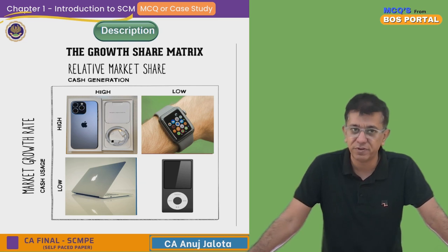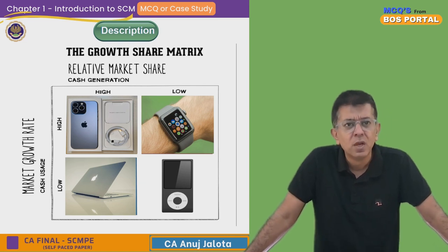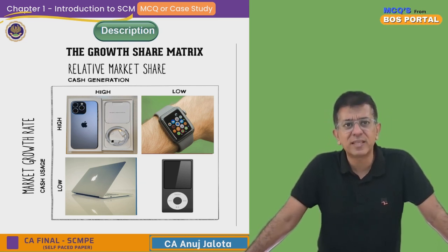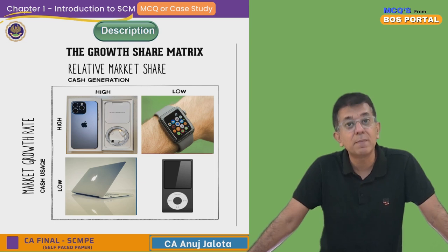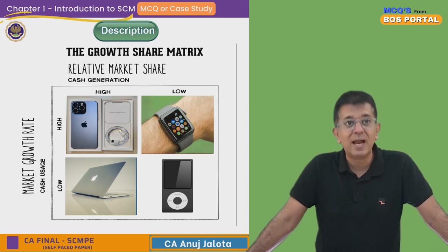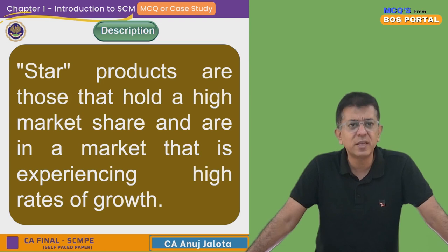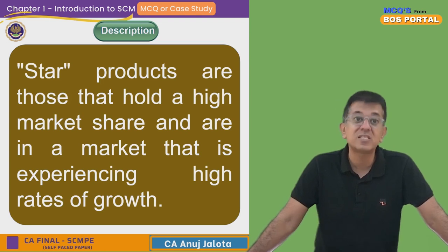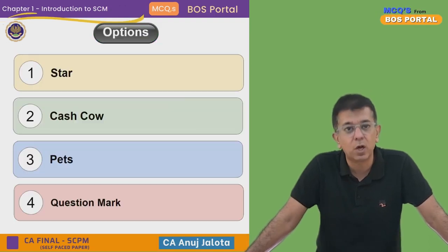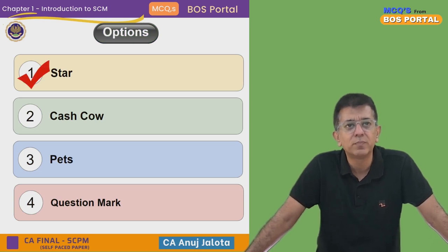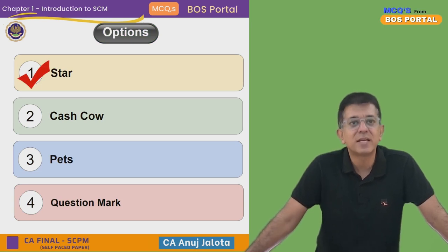So the question was: any product that has high market share and a high growth rate should be categorized as which product? Obviously, it should be a Star product. Out of the four options, the first one is the correct answer.